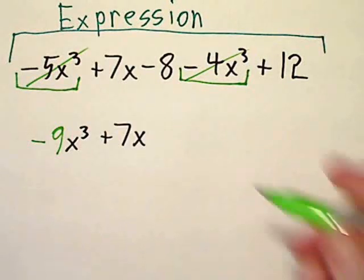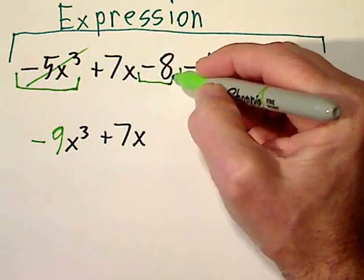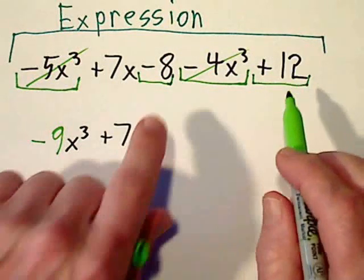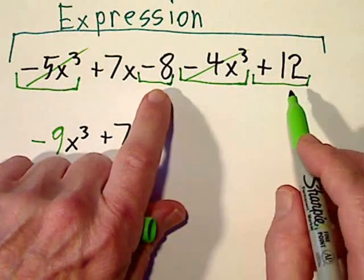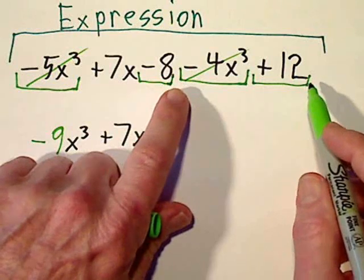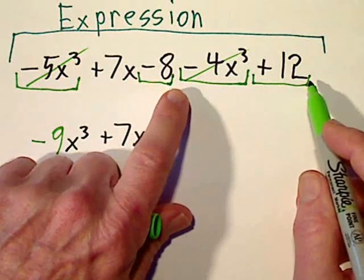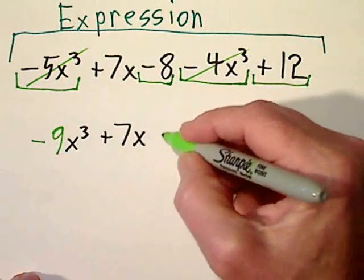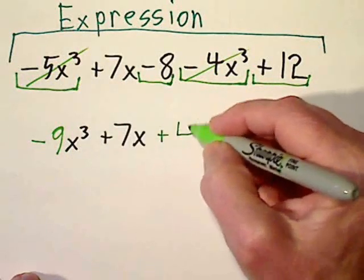And then, it might seem kind of strange, but this negative 8 and positive 12, those are considered like terms. Because they don't have a variable or exponent. So there's no difference with their variable or exponent. So a negative 8, a positive 12, when we put them together, we get positive 4.